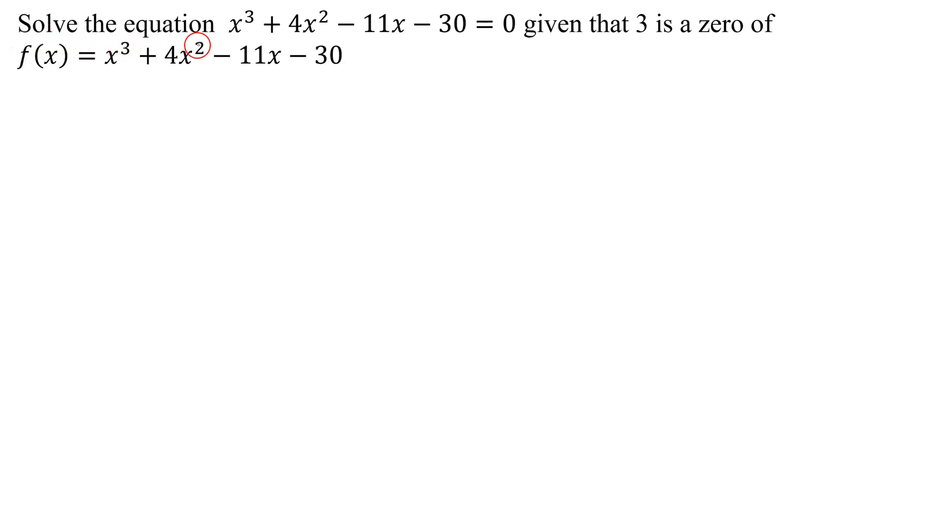In this problem we need to solve the equation x³ + 4x² - 11x - 30 = 0 given that 3 is a zero of f(x) = x³ + 4x² - 11x - 30.